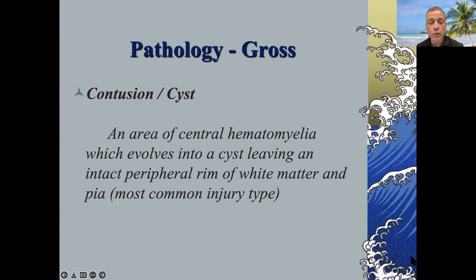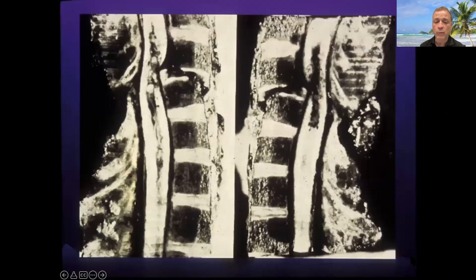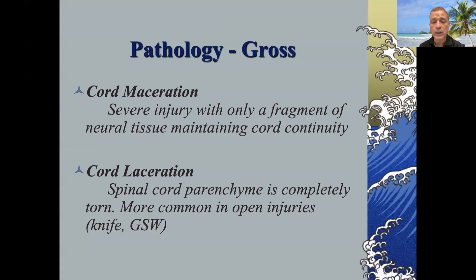The most common pathology is that of an area of central cystic necrosis or cystic degeneration, which usually evolves from an area of central hemorrhage. There may be a preservation of a peripheral rim of white matter or pia. This autopsy specimen shows a fracture dislocation with a central area of hemorrhage within the cord, while the cord remains in continuity — the most common finding after spinal cord injury.